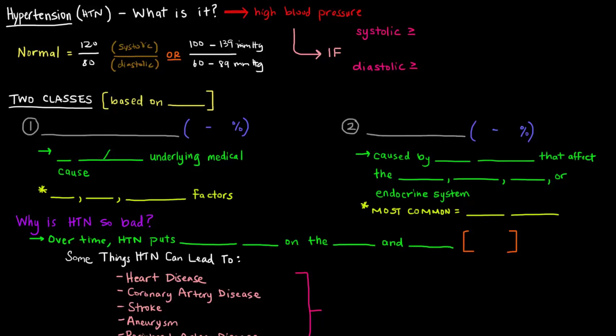Sometimes people say that anything from 120 up to 139, or from 80 to 89, is considered pre-hypertensive, and that everything below 120 over 80 would be considered normal. But generally speaking, this is the normal range. But if you go beyond that, that would be considered high blood pressure.